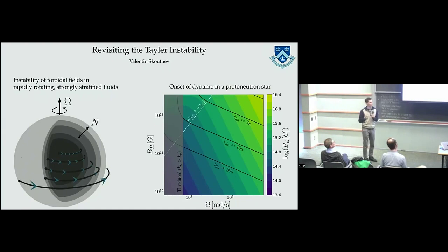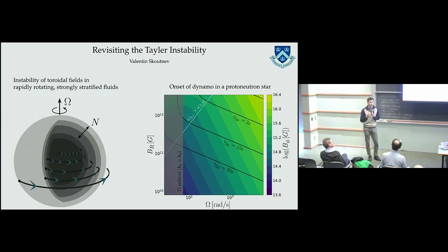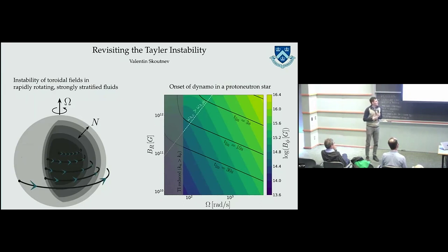This plot gives a sense of when the Taylor-Spruit dynamo, if it exists, should turn on and at what toroidal field strength. On the y-axis is the radial field after merger or core-collapse supernova; on the x-axis is the rotation rate. You keep winding the toroidal field — it grows linearly in time — until at some point you trigger the Taylor instability. The Taylor instability has a fairly slow growth rate, and your dynamo turns on when its growth rate becomes comparable to one over the lifetime of the neutron star.